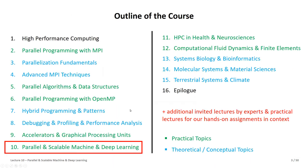That was a brush-up of lecture 9, which is also a practical topic relevant to your assignment number three. GPUs are processing capabilities, so we want to use them with real applications. We are now in the second part of the course — having climbed over all the technical key aspects, we now look at application areas like machine learning, deep learning, health and neuroscience, CFD, systems biology, molecular systems, climate modeling, and terrestrial systems.